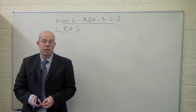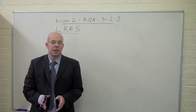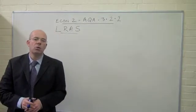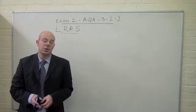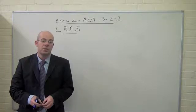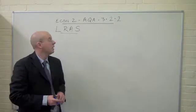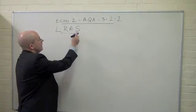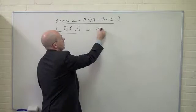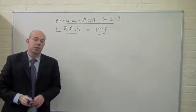We're next going to look at the issue of the long-run aggregate supply curve. Now in terms of dealing with this, you've got to think about what we mean by the long-run. Not all economists are necessarily going to agree as to where the long-run lies. So in terms of that long-run aggregate supply curve, it is pretty much the same thing as the production possibility frontier.